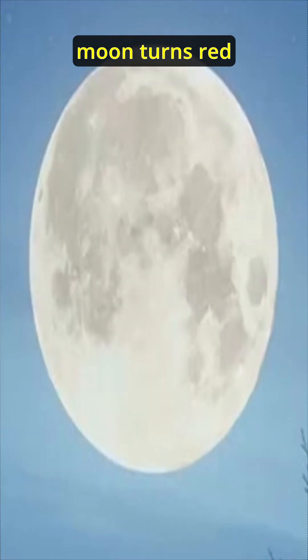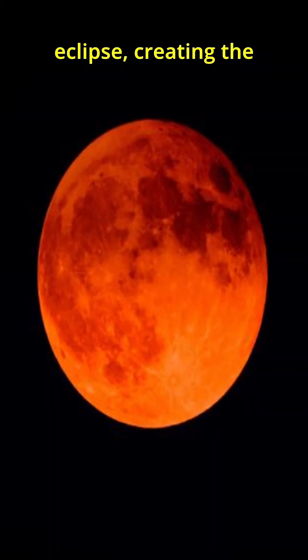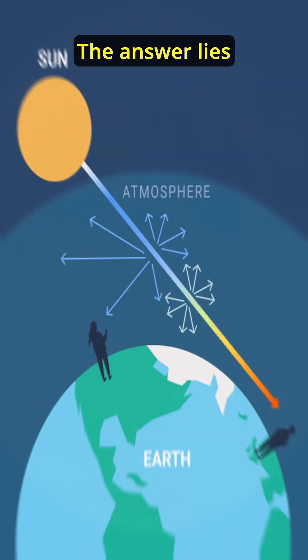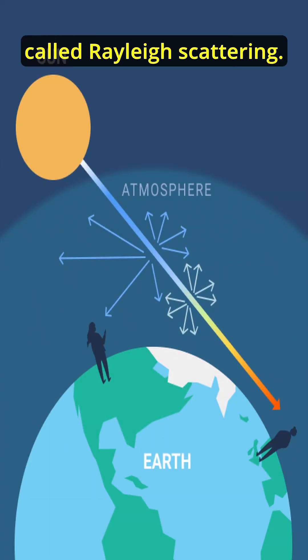Have you ever wondered why the moon turns red during a lunar eclipse, creating the magical blood moon? The answer lies in a phenomenon called Rayleigh scattering.